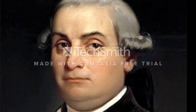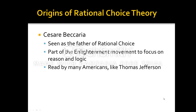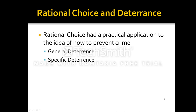The origins of this theory lie with an Italian named Cesare Beccaria. He is seen as the father of Rational Choice and he was part of the whole Enlightenment movement. He wrote primarily in the 1760s, and his famous material on Rational Choice was read by Thomas Jefferson.